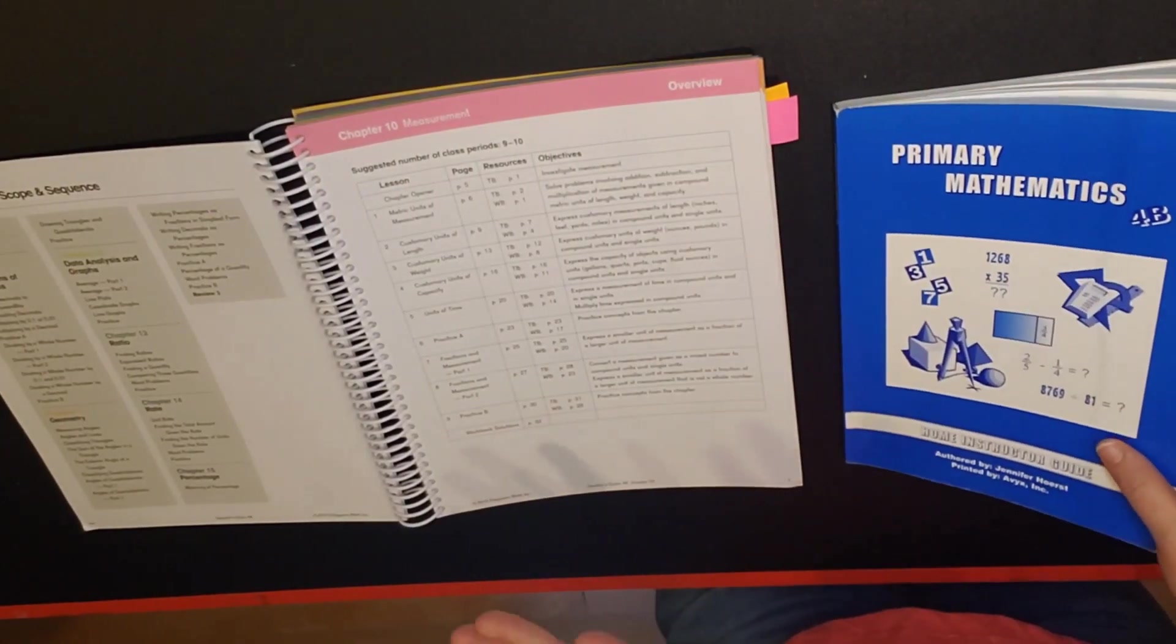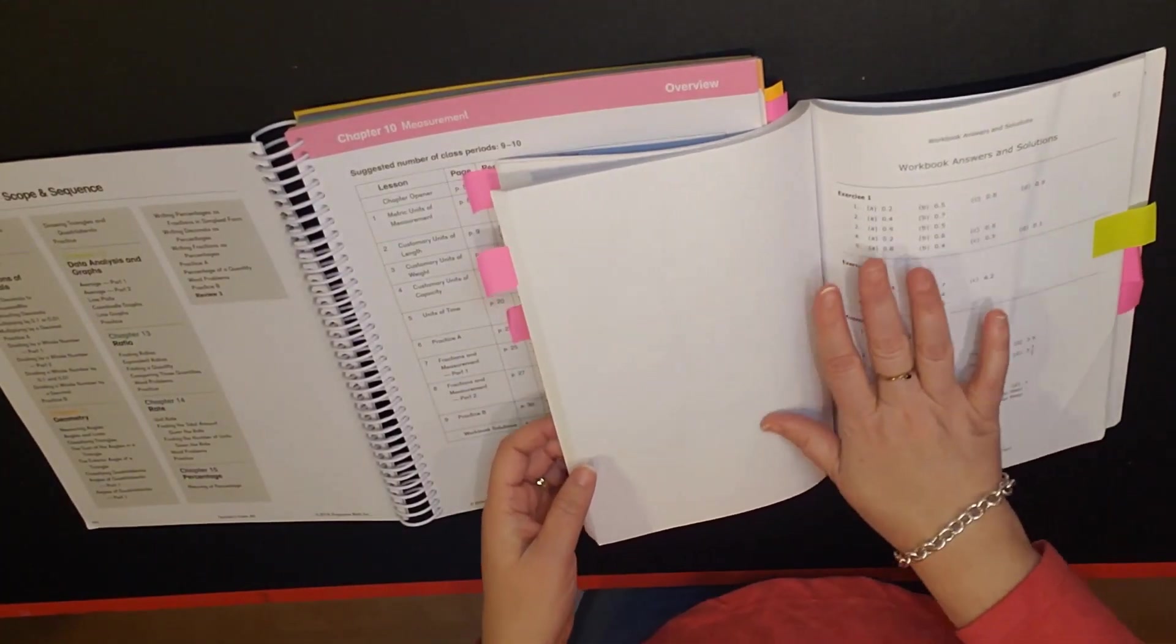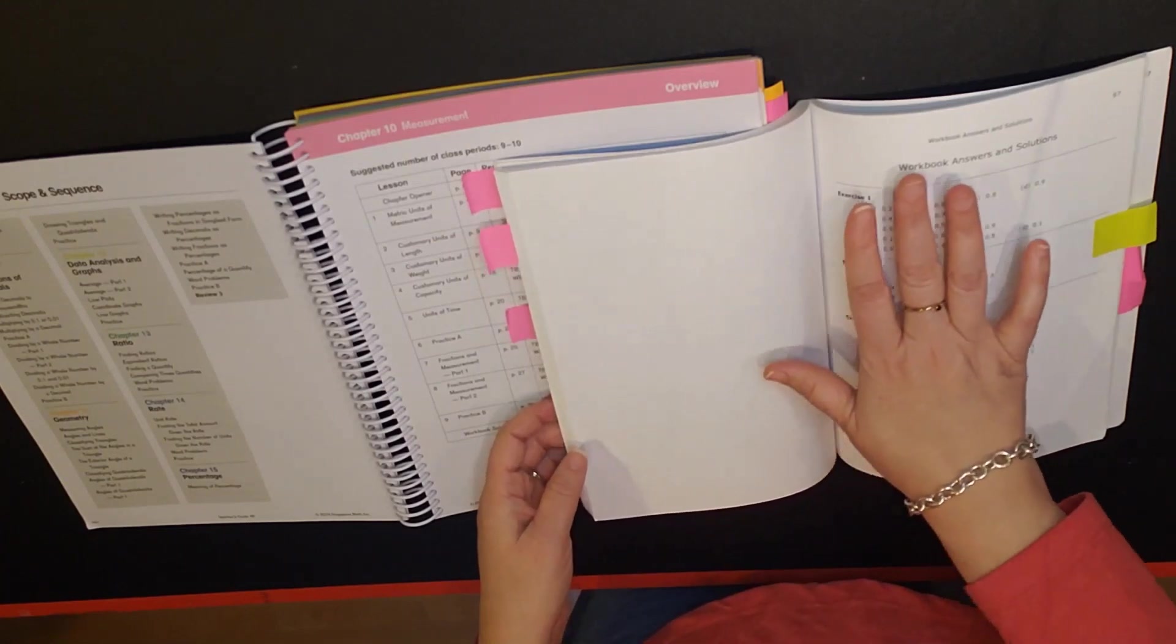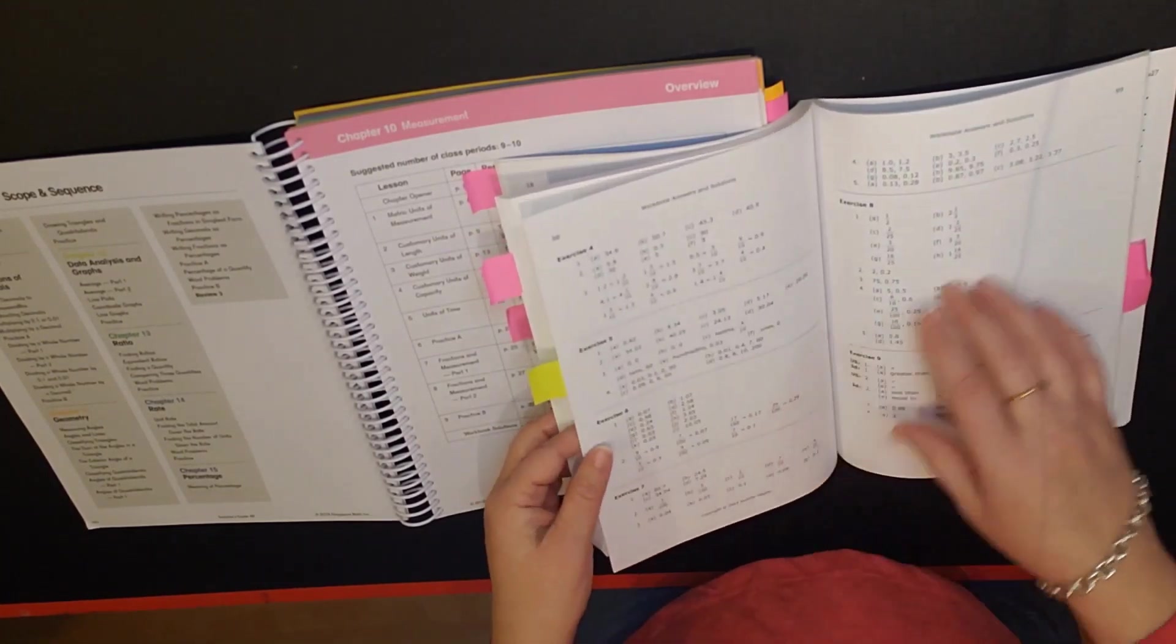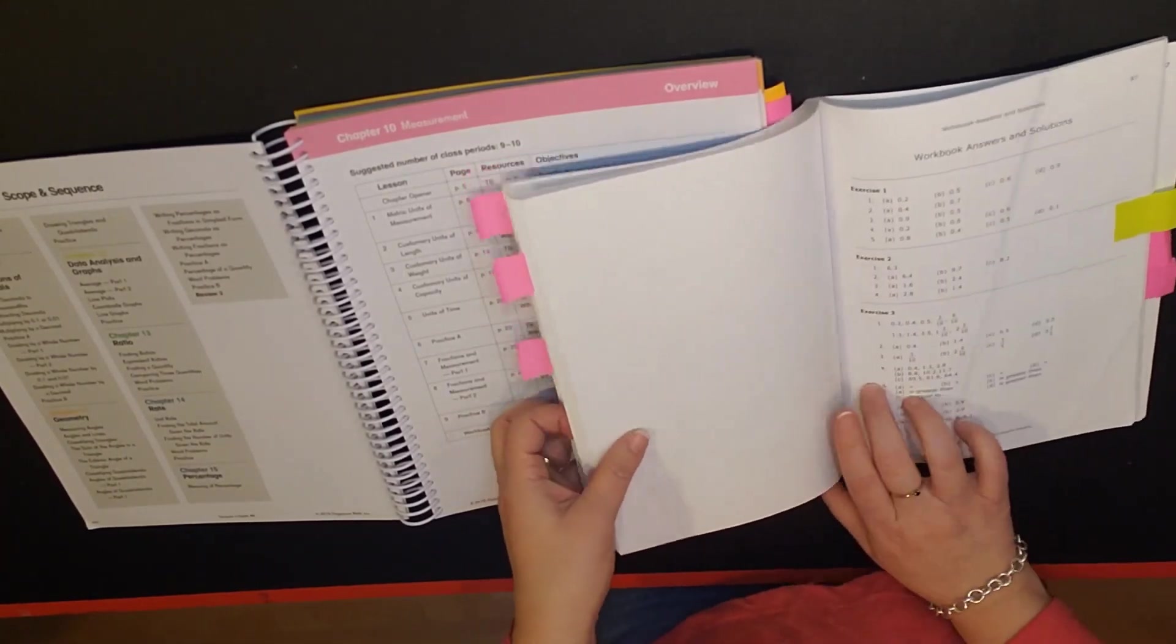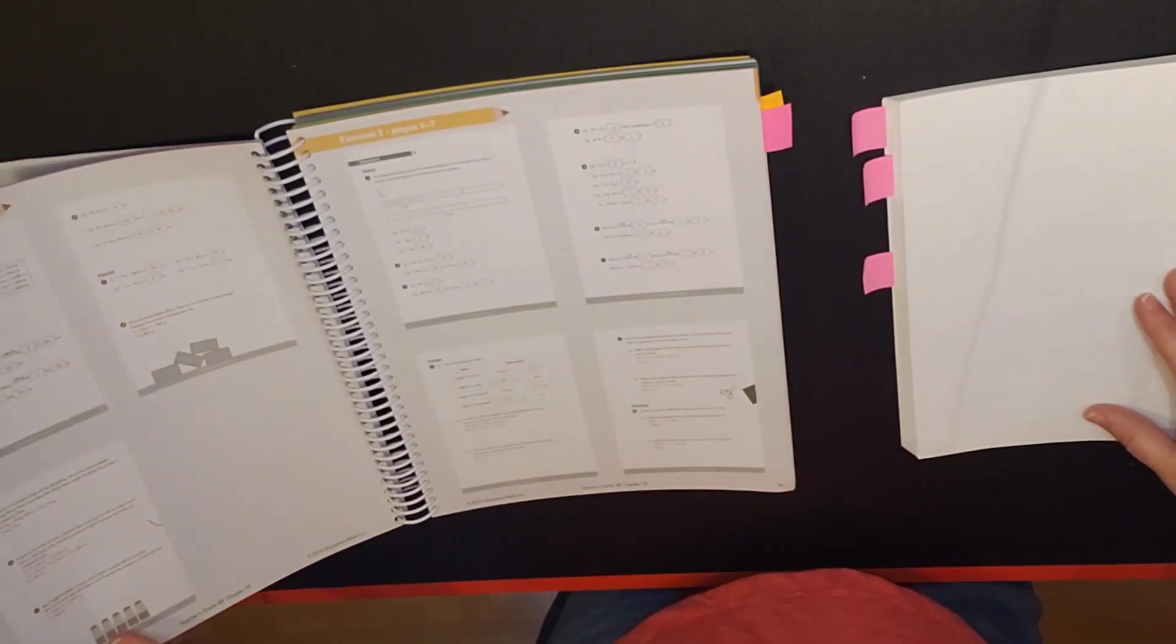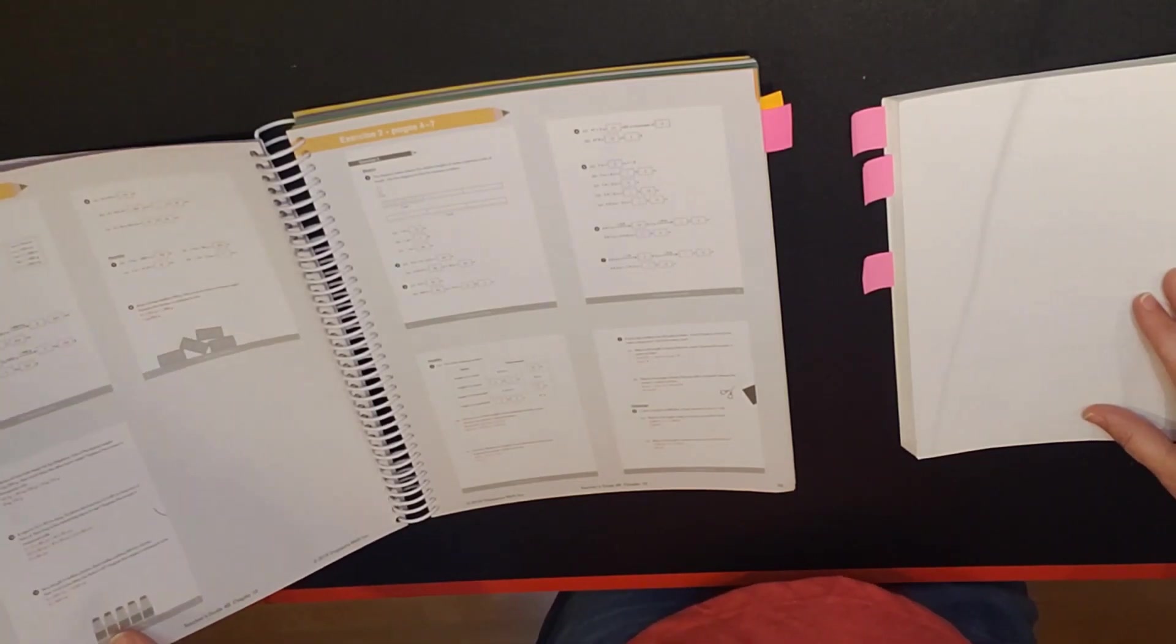I just wanted to point out a couple more things. Number one is that the workbook answers and solutions are in both manuals. Answers and solutions for primary are in the back of the book and they're separated by each exercise. For dimensions at the end of each chapter you'll have the workbook pages for that chapter with the answers included.